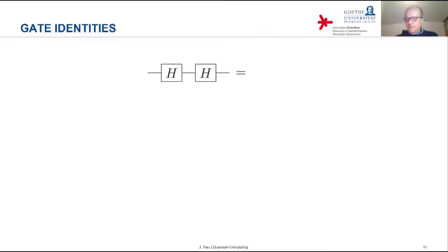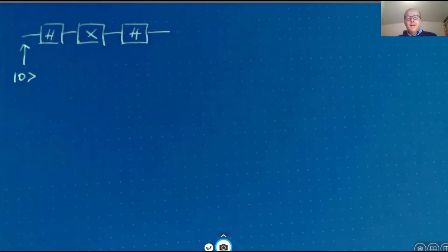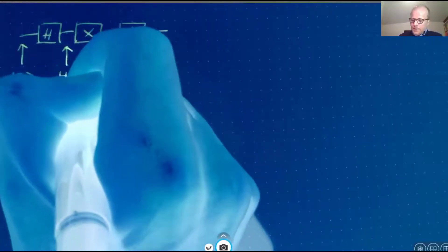For example, two Hadamard gates in a row, they just give the identity. That's because the Hadamard operator, like all the Pauli operators, its square is the unit operator. H² is unit operator. So two Hadamard operators in sequence neutralize each other. Now let's consider this next sequence. We have a Hadamard gate followed by a Pauli X gate and then another Hadamard gate. Imagine that you start with a basis state zero. Then the Hadamard gate transforms that to the plus state.